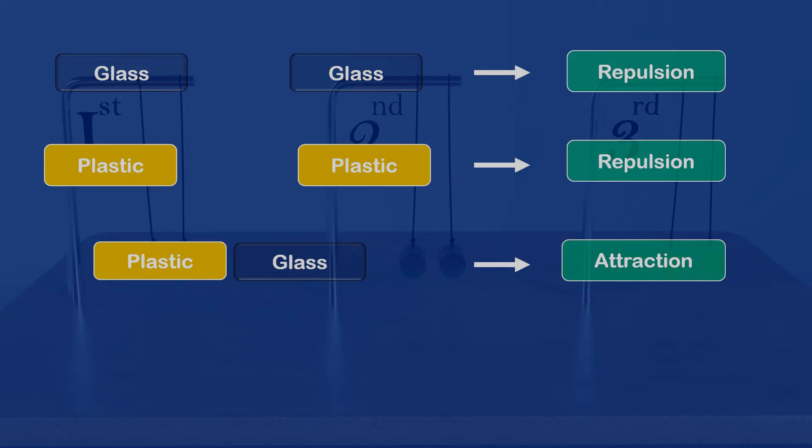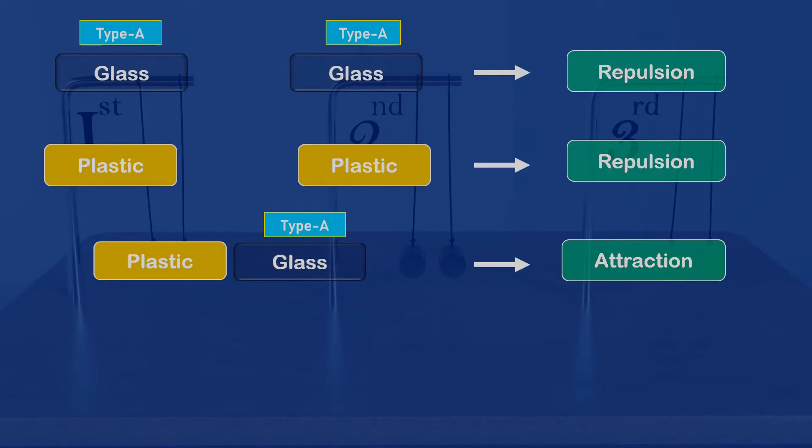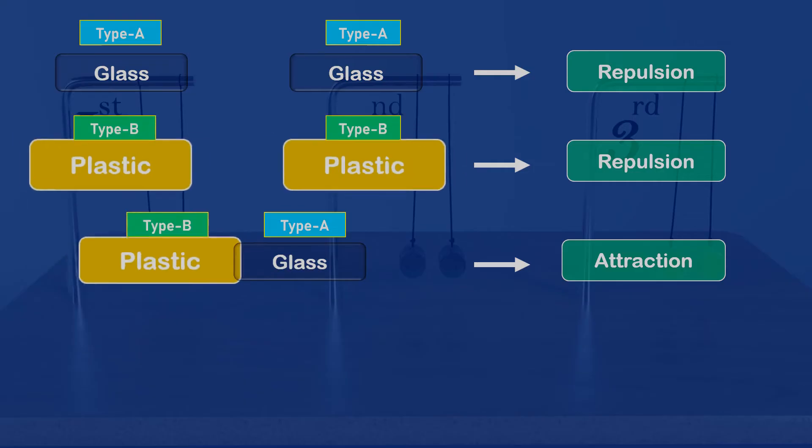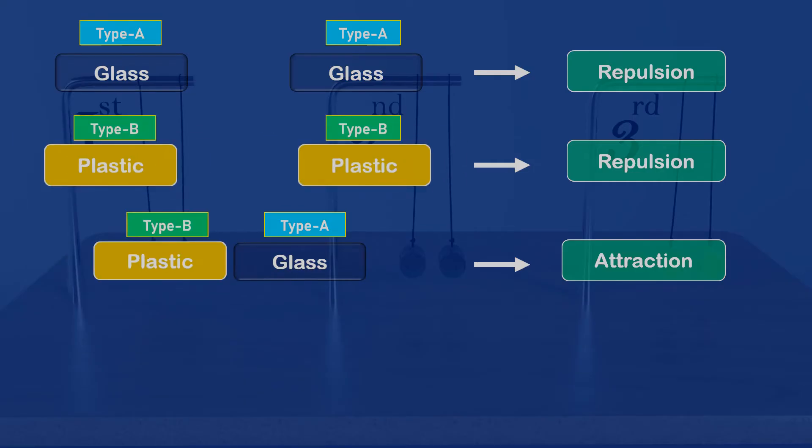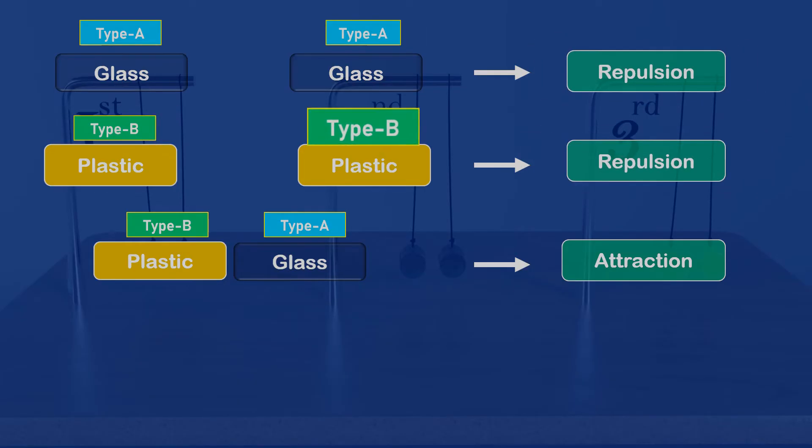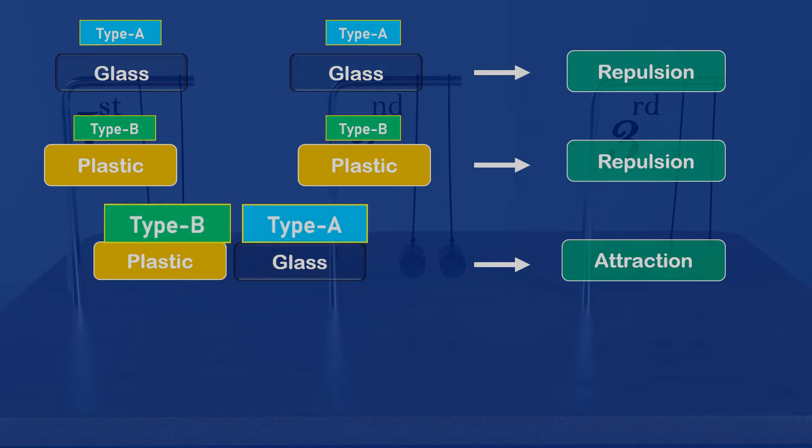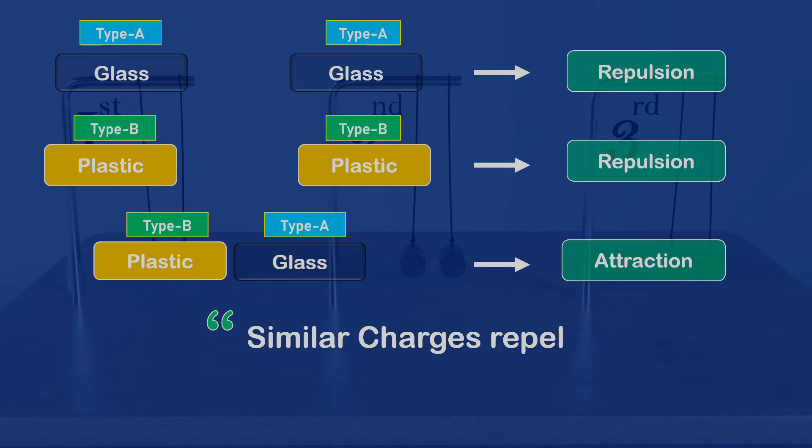Say, the charge produced on the glass rod is of type A, while the charge produced on the plastic rod is of type B. Similar charges, that is A type charge will repel another A type charge, and B type charge will repel a similar B type charge. At the same time, there will always be an attraction between dissimilar A type charges and B type charges. And we got our rule: similar charges repel, while dissimilar charges attract.